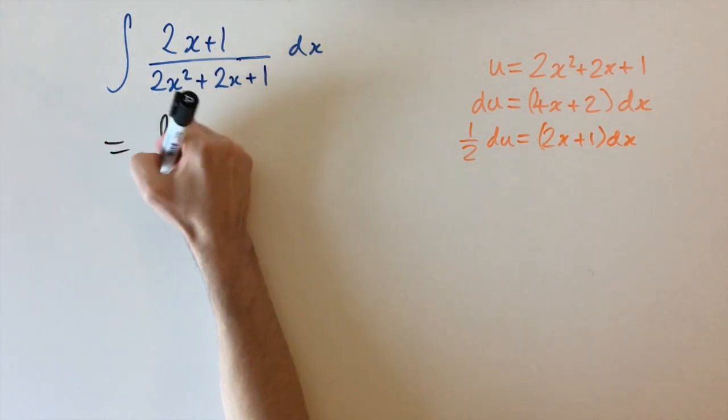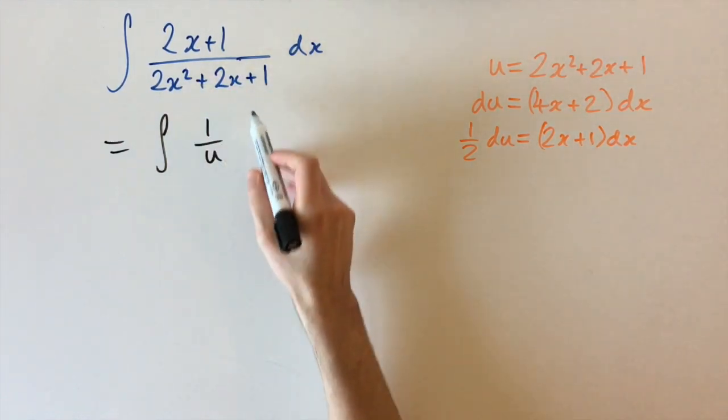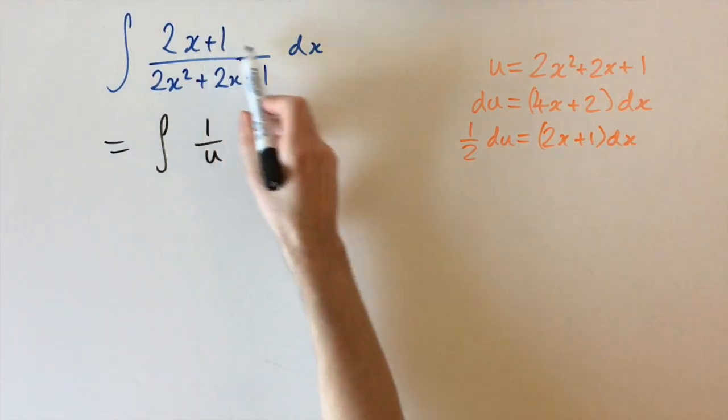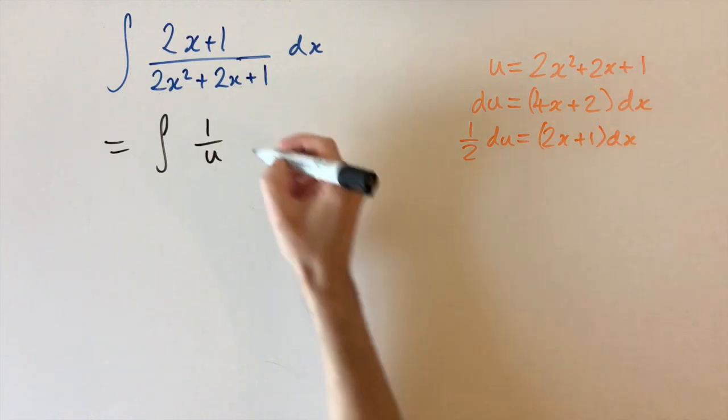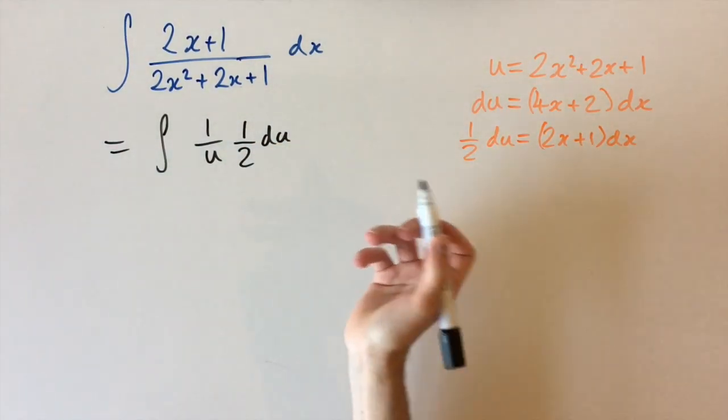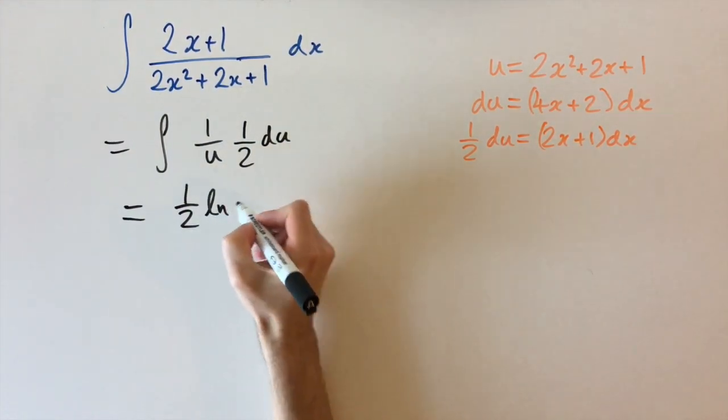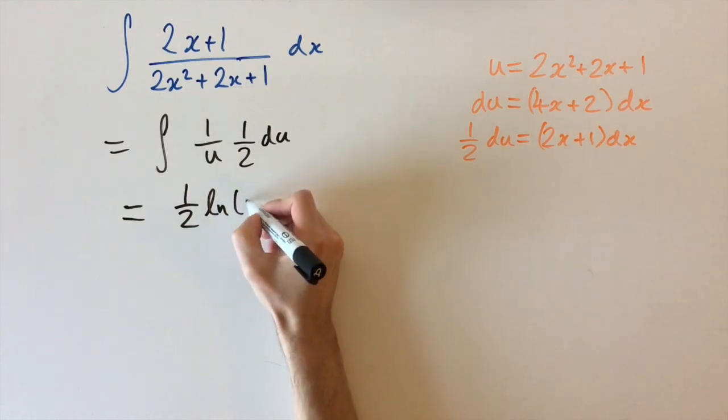So this integral is the integral of 1 over u, just replacing the denominator, and if we group the top two terms we replace this by a half du. This is a very simple integral. We know to integrate this, this comes out as a half times the logarithm, natural logarithm of u plus c.